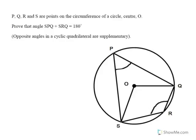I'm going to start off by labeling the angle SOQ as 2x. And if that's 2x, then the angle SPQ is half the angle SOQ, because the angle at the center is twice the angle at the circumference.